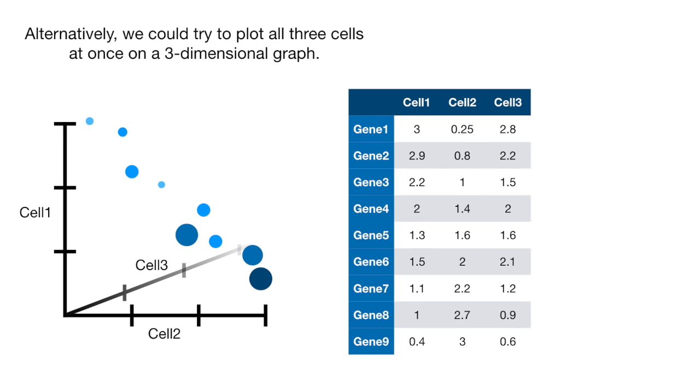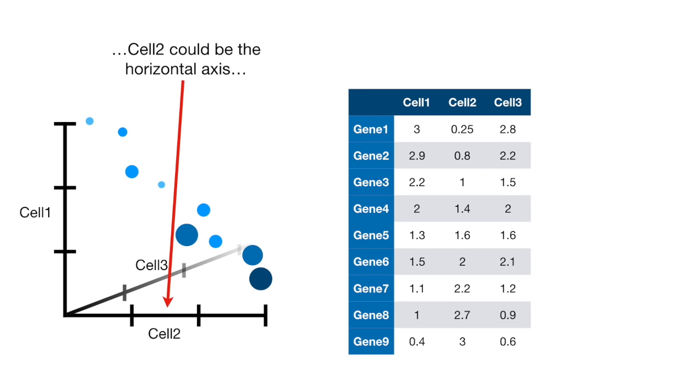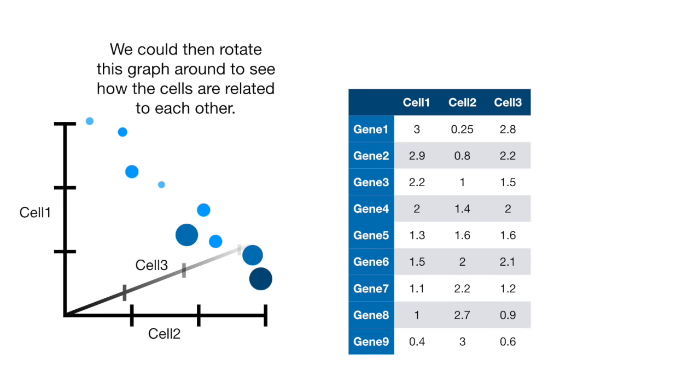Alternatively, we could try to plot all three cells at once on a three-dimensional graph. Cell 1 could be the vertical axis, cell 2 could be the horizontal axis, and cell 3 could be depth. We could then rotate this graph around to see how the cells are related to each other.